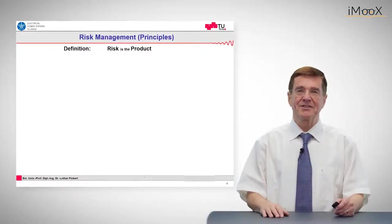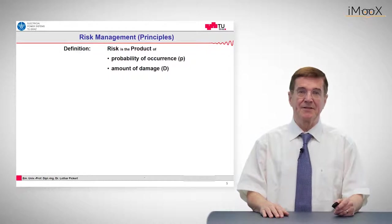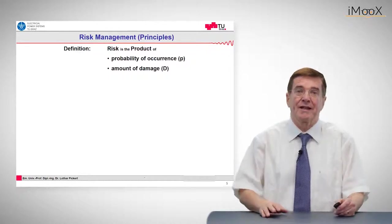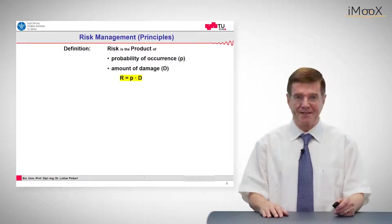Risk is by definition the product of probability of its occurrence and the amount of damage in case of a fault or event. So that means R = P × D.